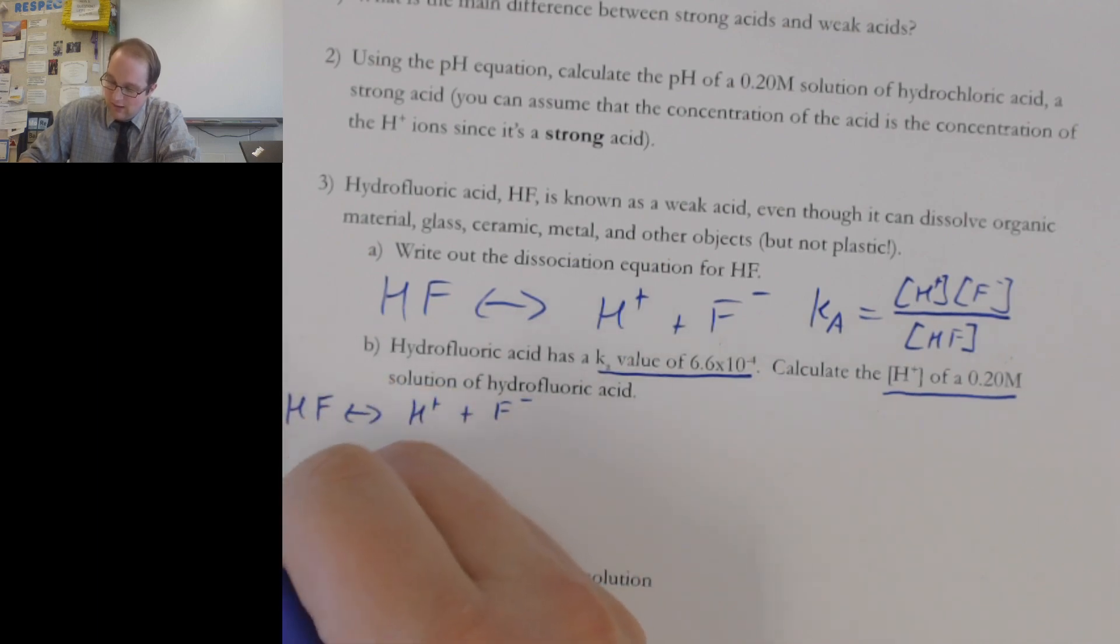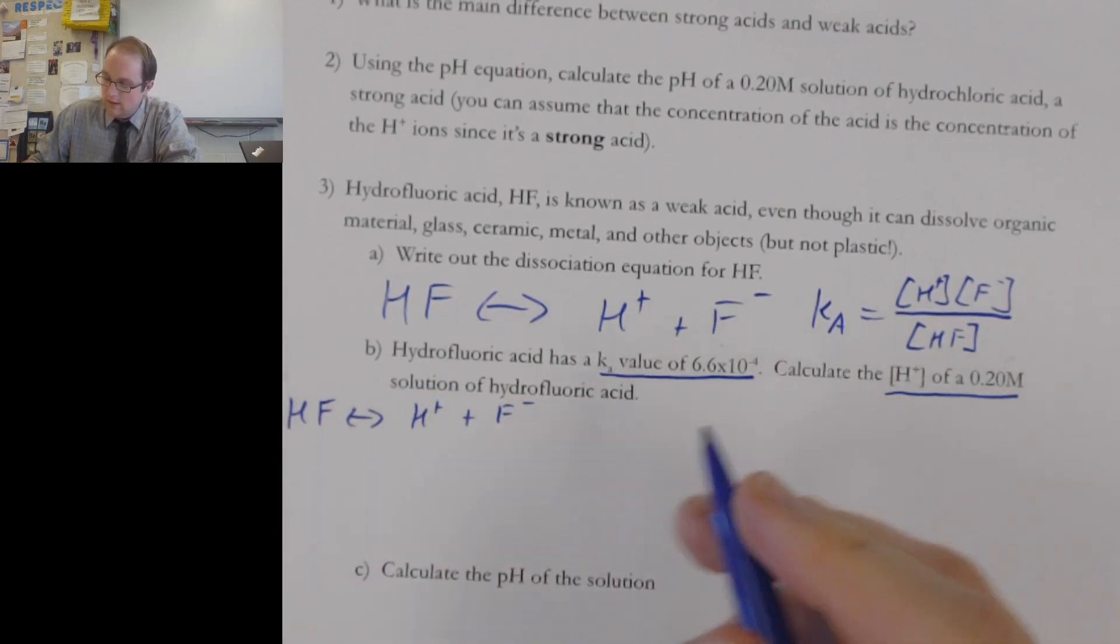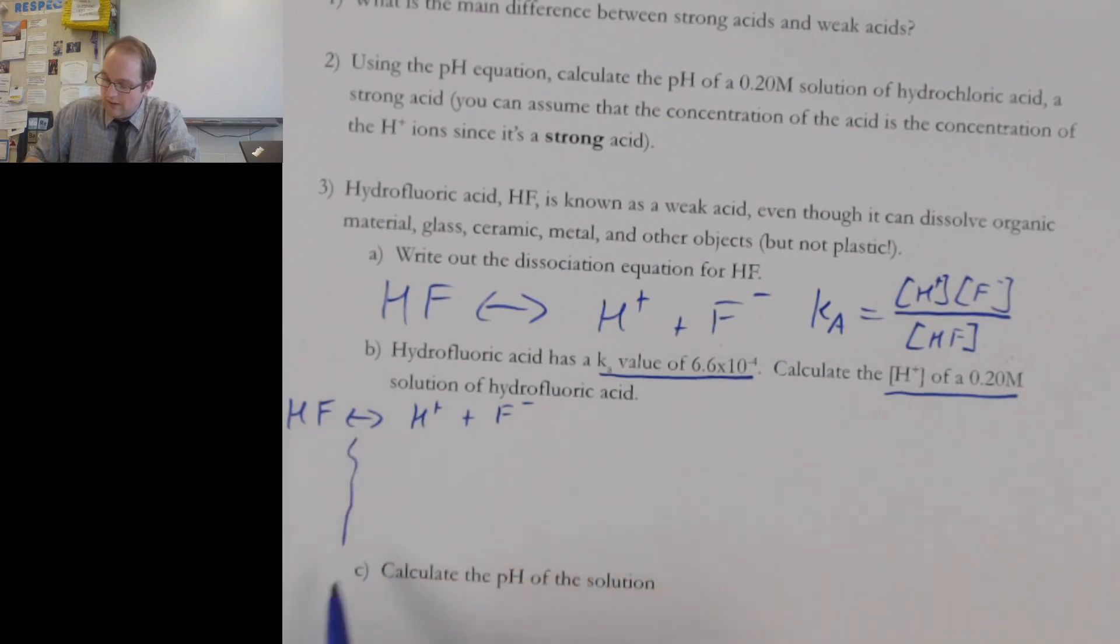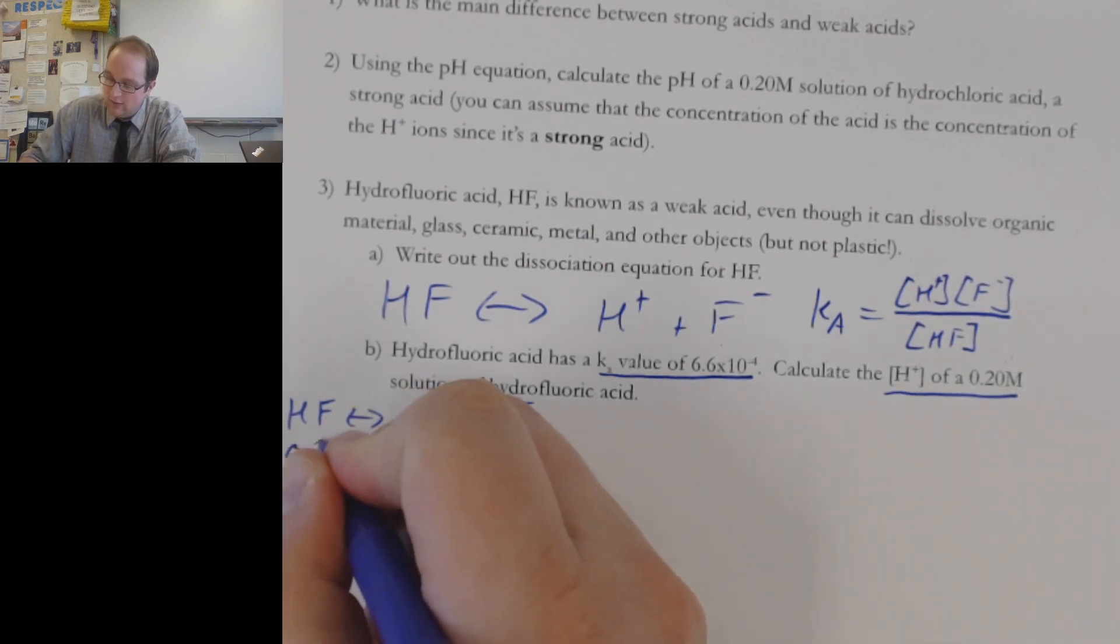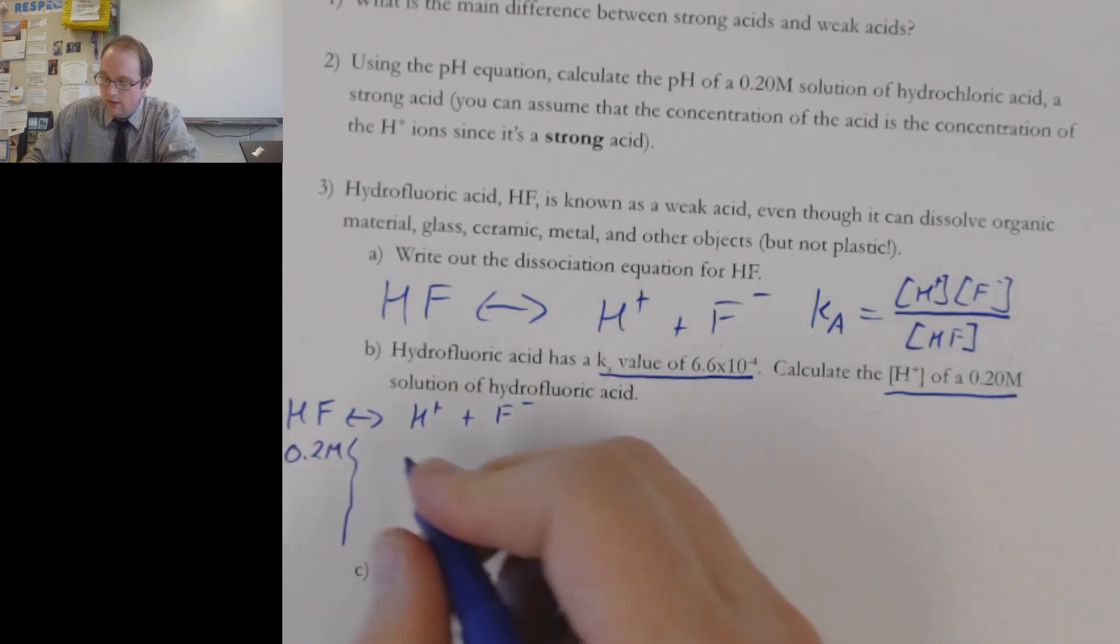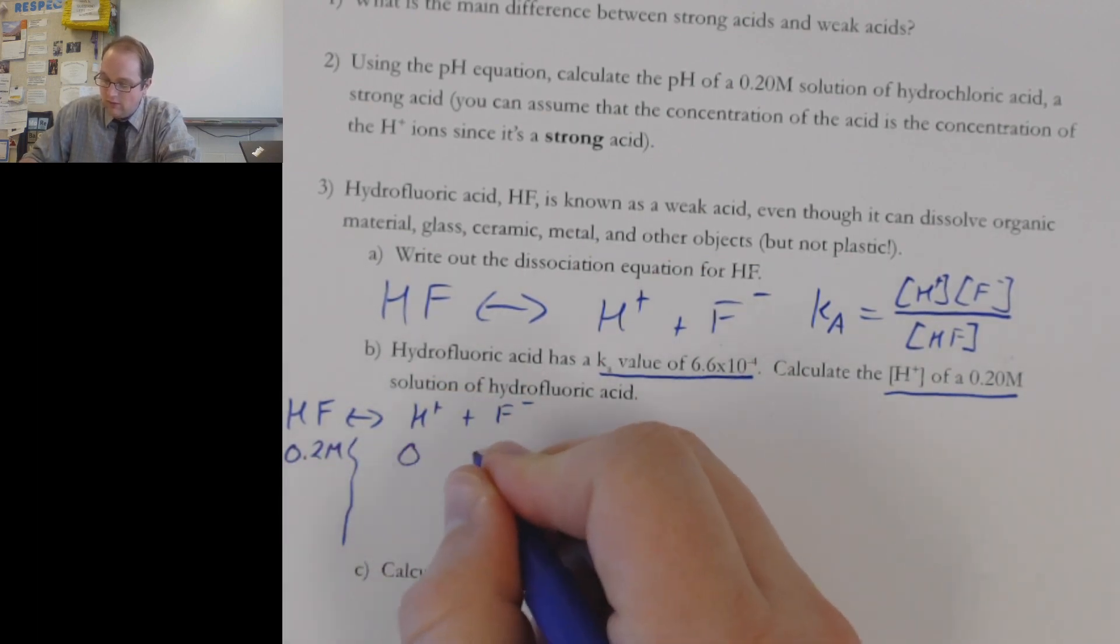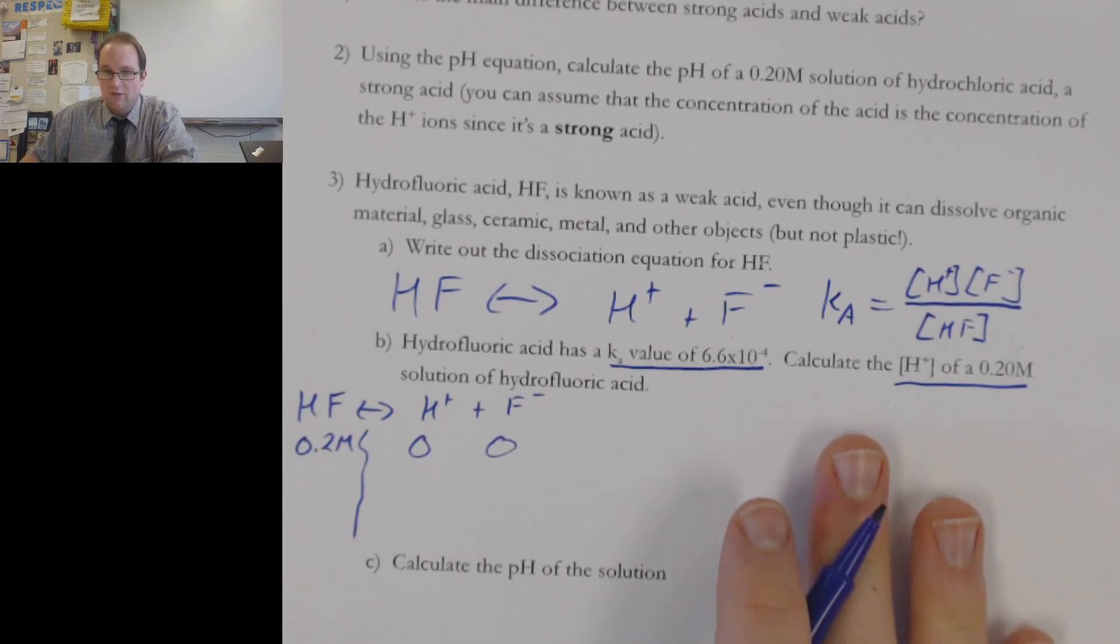So we're going to have an ice table. We know our initial amount of, excuse me, we know the 0.2 molar solution of hydrofluoric acid. So that is our 0.2 molar here. And since we aren't given any other information, these guys always, of course, are going to start off at 0.